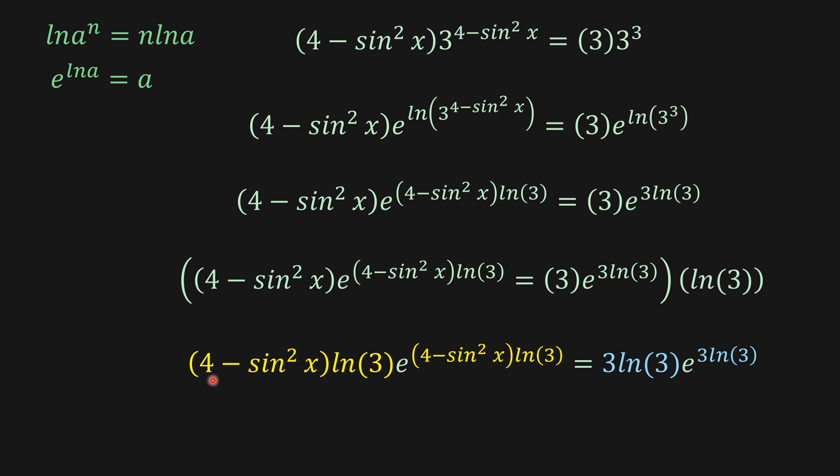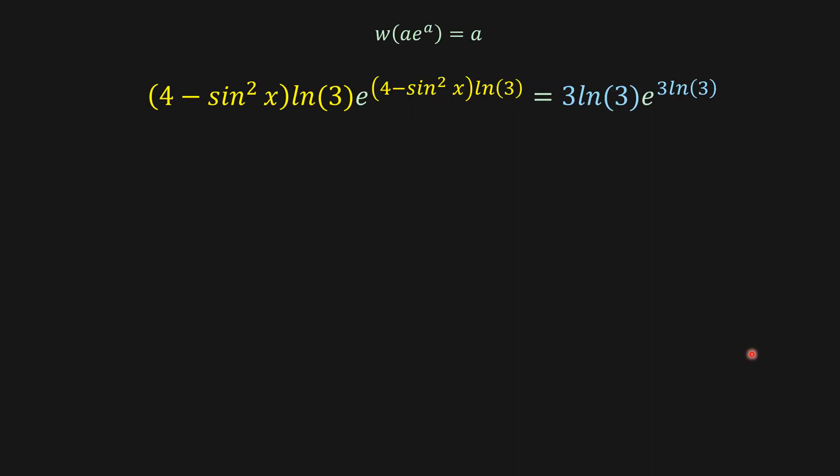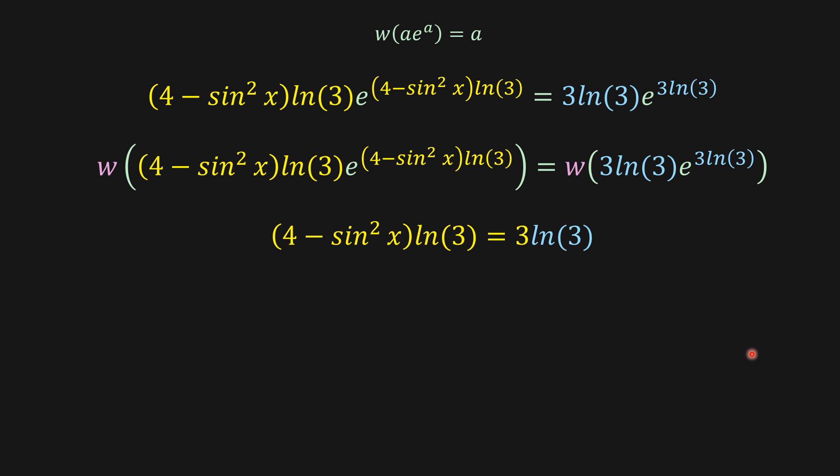Now we can see that we have what we were looking for. This term here is equal to this term in the power, and this term here is equal to this term in the power. So now we can apply the Lambert function. And then applying the Lambert function here, w, we're going to get this one here, which is our a on the left side and our a on the right side.